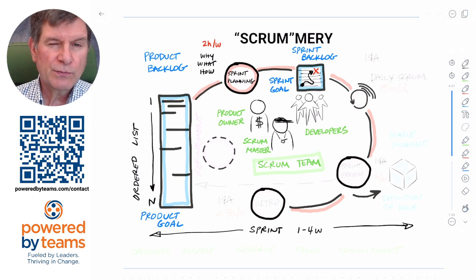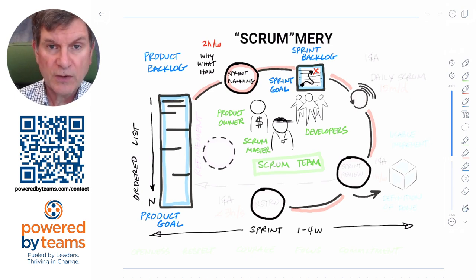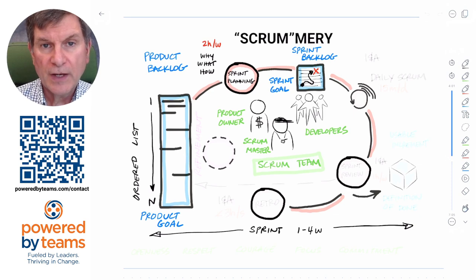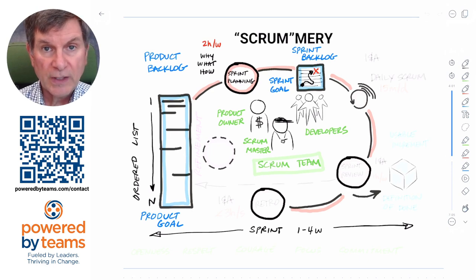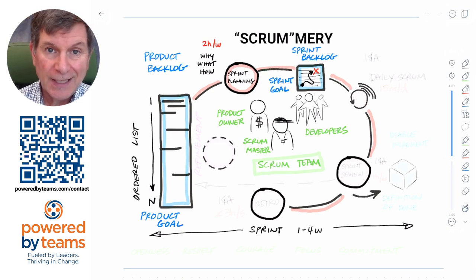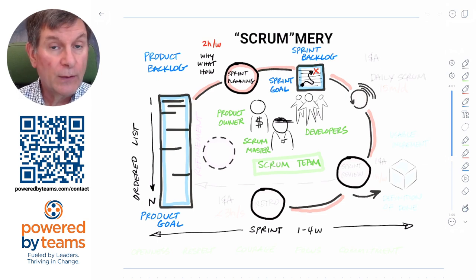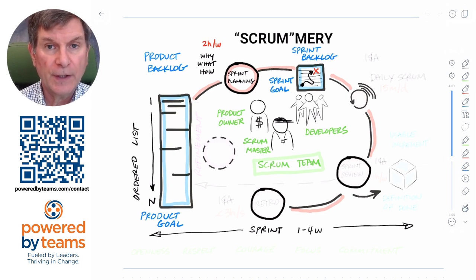Scrum is protected both in terms of these time boxes and also in terms of scope. The product owner owns the product backlog, but the developers own the sprint backlog. Once the sprint starts, nobody can force new work into a sprint without the developers' permission — it's got to at least be a negotiation. A common conversation is: 'What are you willing to give up to get it?'